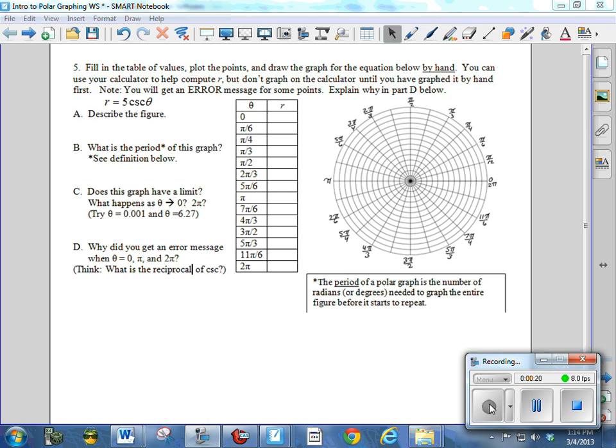First of all, we have an equation that says I want you to actually plot the points by hand, and then we'll look at how to do it on the calculator as well. So describe the figure. Well, we need to graph it first. So never mind about part A, we have to graph it first. It says R equals 5 cosecant theta. Notice you're going to get an error message. Actually, it'll say undefined. So let's just actually put some of these values in here.